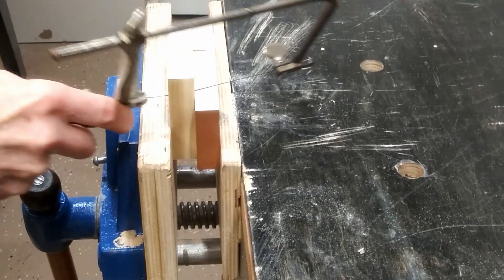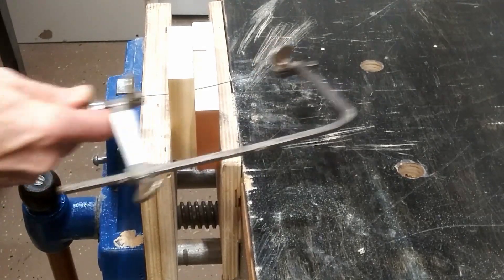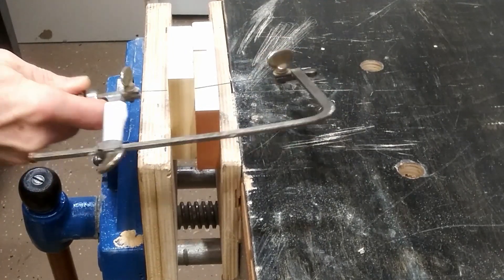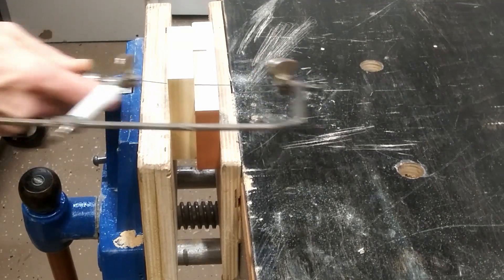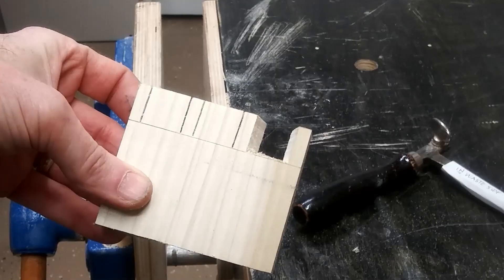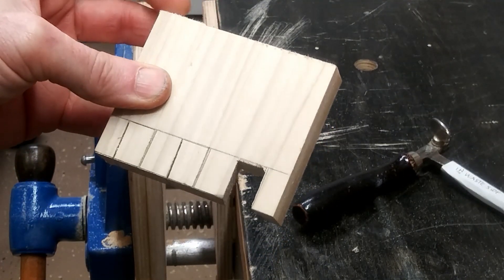Then I can drop my fret saw into there and guide the fret saw along the top of that guide. That way I can stay pretty close to the baseline without damaging it. You can leave just a small amount of material. The less material you leave, the quicker it is to do your chiseling.